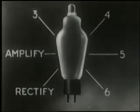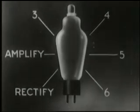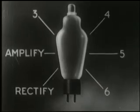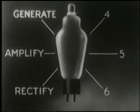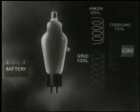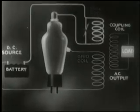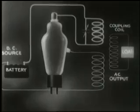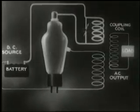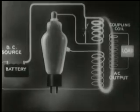Up to now we've considered two of the basic things that the electronic tube can do: it can rectify, it can amplify. A third thing it can do is generate. The term 'generate' in this connection is meant in a general rather than a technical sense. A triode is connected for oscillation in the way shown here. The system then becomes capable of changing direct current into alternating current. Note that what we're doing in this case is amplifying in the usual way and then feeding back to the grid part of the amplified voltage.